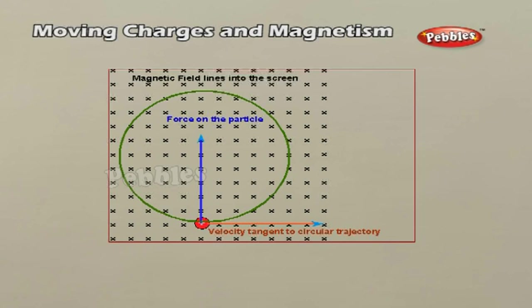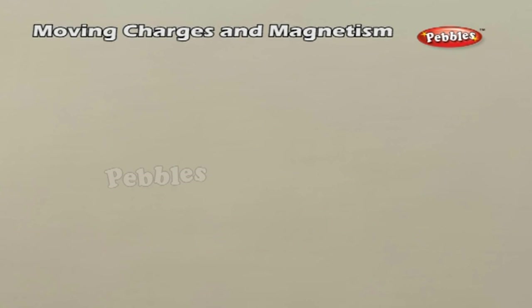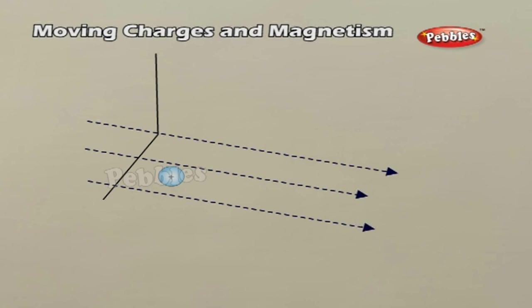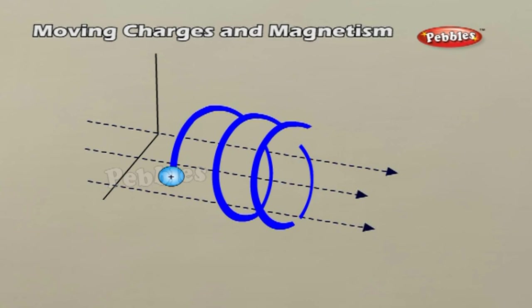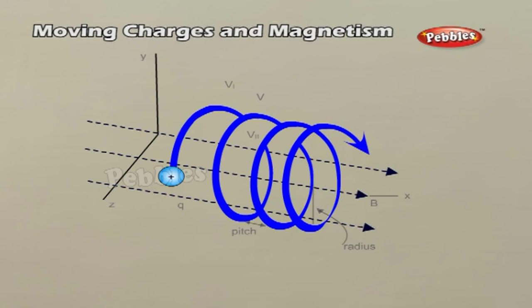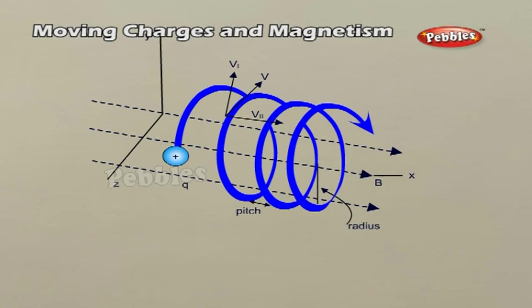If R is the radius of the circular path of a particle, then a force of MV²/R acts perpendicular to the path towards the center of the circle and is called the centripetal force. If the velocity V is perpendicular to the magnetic field B, the magnetic force is perpendicular to both V and B and acts like a centripetal force, with magnitude QVB. Equating the two expressions, MV/R equals QVB, which gives R equals MV/QB for the radius of the circle. If omega is the angular frequency, we get omega equals 2πV, which equals QB/M.